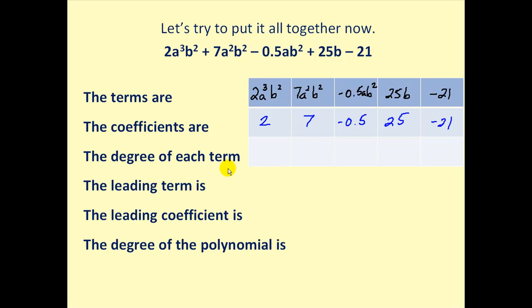Next, the degree of each term is the number of variable factors or the sum of the exponents on the variables. So this term has degree 5, this term has degree 4, this term has degree 3 — two factors of b and one factor of a.